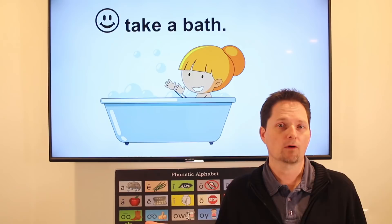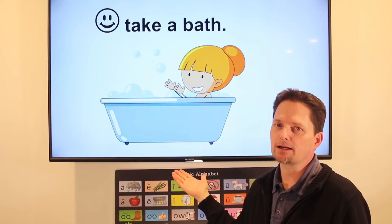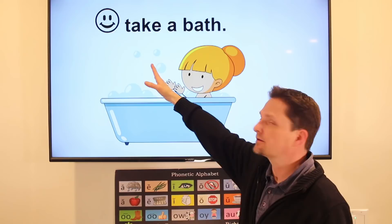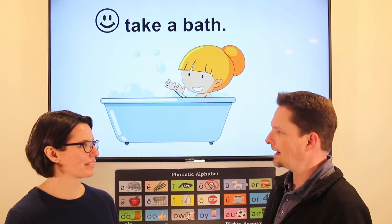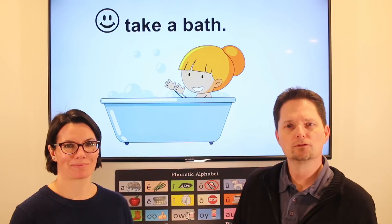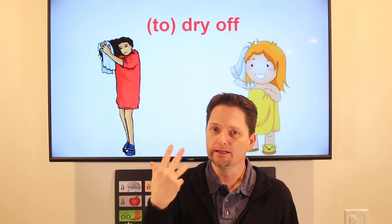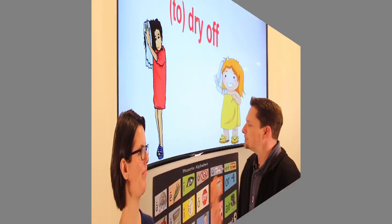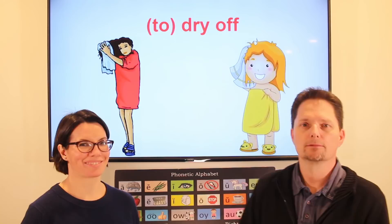In the evening, before I go to bed, I take a bath. In the morning I take a shower; in the evening I take a bath. Remember to use 'a' for one — 'take a bath.' Link the words: 'take a bath.' Do you take a bath to relax in the evening? Yes, I take a bath to relax. After I take a bath, I dry off — just like I dry off my face, I dry off with a towel. Do you dry off after you take a bath? Yes, after I take a bath, I dry off.